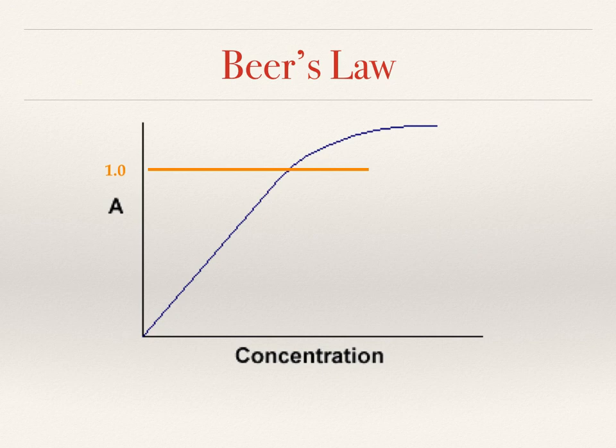Once you get past an absorbance of 1, the relationship becomes non-linear. So whenever we're doing a Beer's Law lab, you always want to make sure that your samples never get beyond an absorbance of 1, otherwise we wouldn't be able to establish a linear relationship between absorbance and concentration.